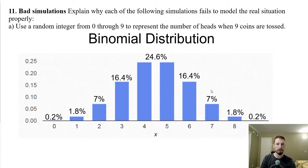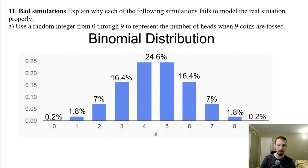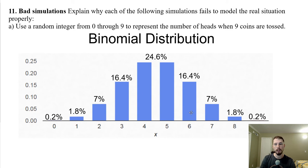Bad simulations: explain why using a random integer from zero to nine to represent the number of heads when tossing nine coins fails. Four and five heads would be the most likely outcomes — both 24.6%. Three and six heads both have a probability of 16.4%. Zero or nine heads in a row has only a 0.2% chance. Again, given by the binomial distribution — the issue is that each outcome is not equally likely for our components.